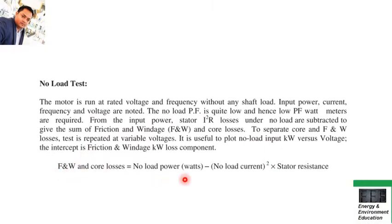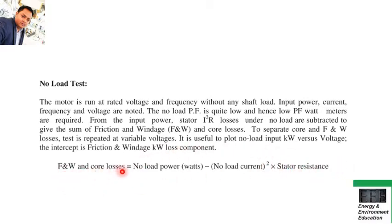Another important formula that may come in the exam directly or indirectly is for friction, windage, and core losses. The formula is: no-load power minus no-load current squared multiplied by stator resistance. This is the complete formula for calculating friction, windage, and core losses. You can use this formula to calculate this particular loss in the exam, whether asked directly or as part of a long answer type question.